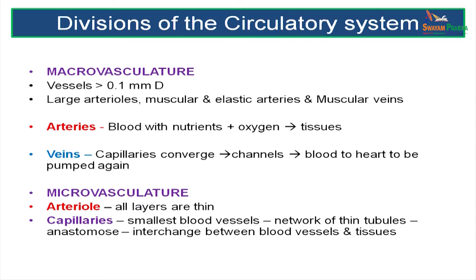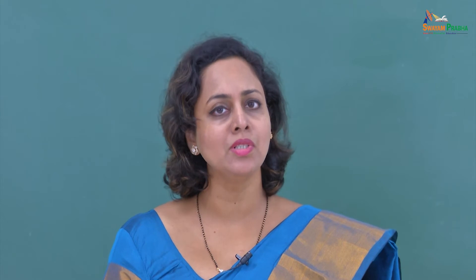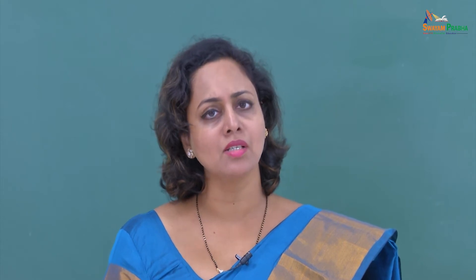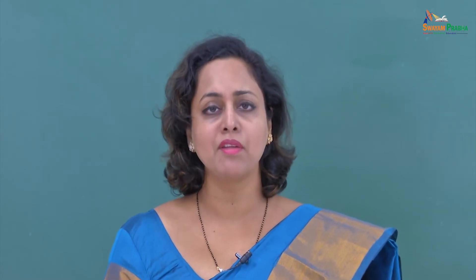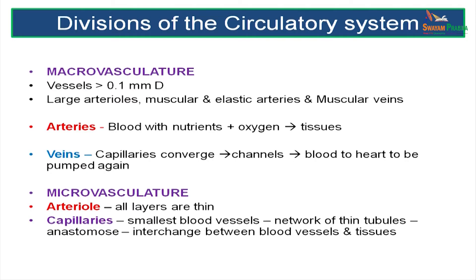Arteries are vessels carrying oxygenated and nutrient-rich blood from the heart to body tissues. Veins, on the other hand, carry deoxygenated blood from the capillaries and from the tissues towards the heart. Microvasculature includes arterioles which have thinner walls and the capillaries which form a rich plexus or anastomosis in body tissues.